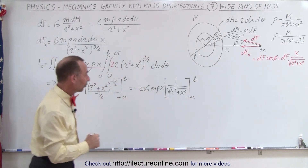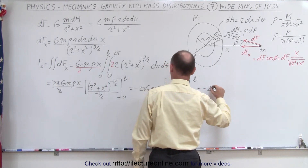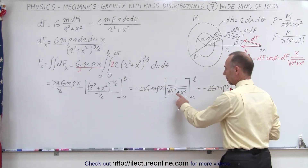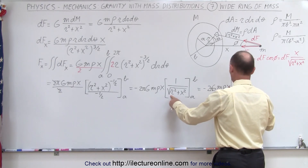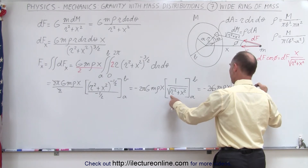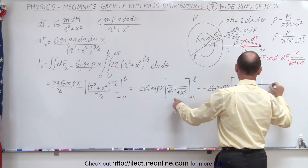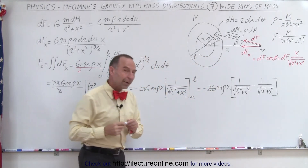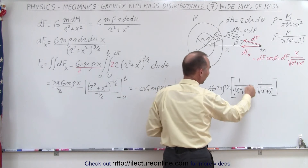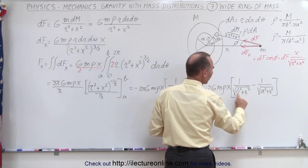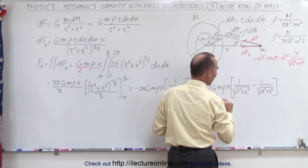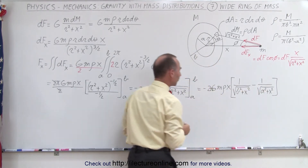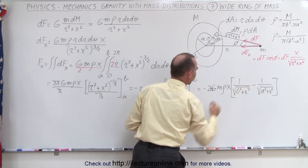Plugging in the limits, this becomes −2GM·ρ·x times [1/√(b² + x²) − 1/√(a² + x²)]. The negative sign is not a problem: since b > a, the first fraction is smaller than the second, making the bracket negative. Absorbing the negative sign reverses the bracket, giving a positive quantity.